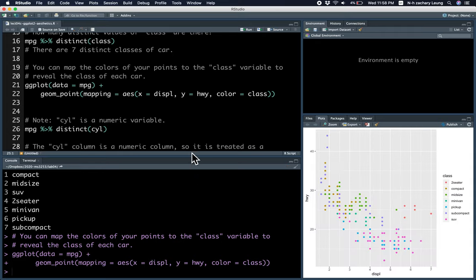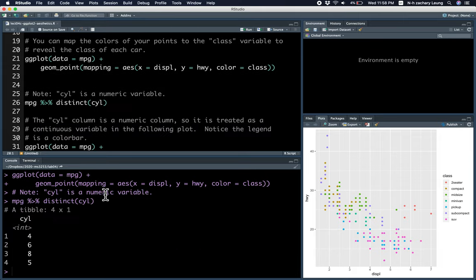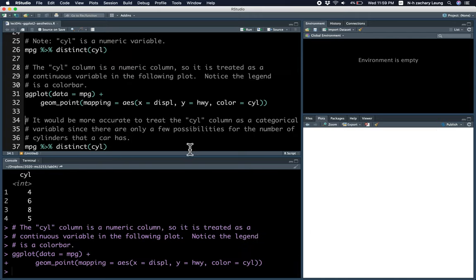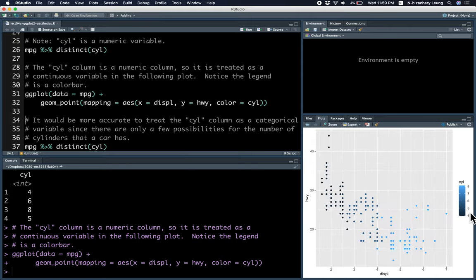And in the case of the cylinder column, there are four possible values - the number of cylinders in the car. If you plot the color using the cylinder column, you see a color bar in the legend.